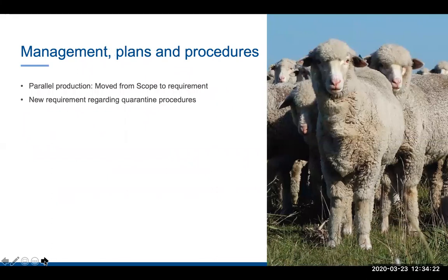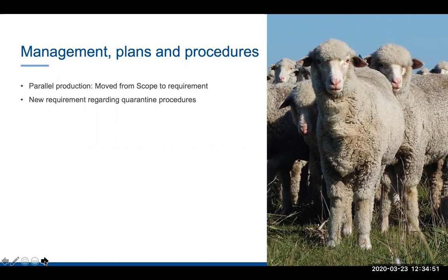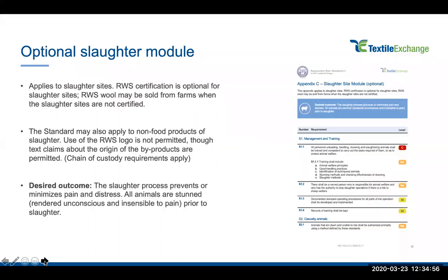On management plans and procedures: the prohibition on parallel production — you cannot have a flock of certified sheep alongside a flock of non-certified sheep, or certified goats alongside non-certified goats on the same farm. This was in the scope and is now clearly a standard requirement. Also in this section we've got new requirements around quarantine best practice when new animals are coming onto the farm.